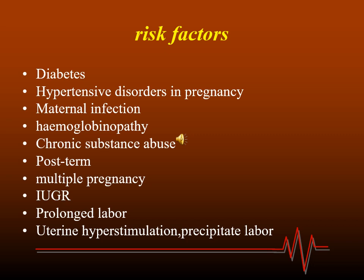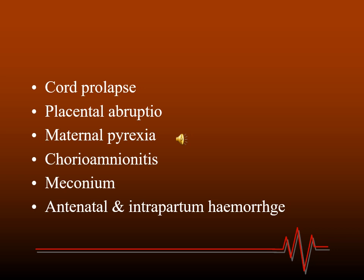Other risk factors include cord prolapse and placental abruption — in both cases there will be decreased blood supply to the fetus: cord prolapse due to cord compression, and placental abruption due to premature placental separation. Additional risk factors include maternal infection or hypoxia whatever the cause, chorioamnionitis, meconium-stained liquor which indicates fetal distress, and antepartum and intrapartum hemorrhage.